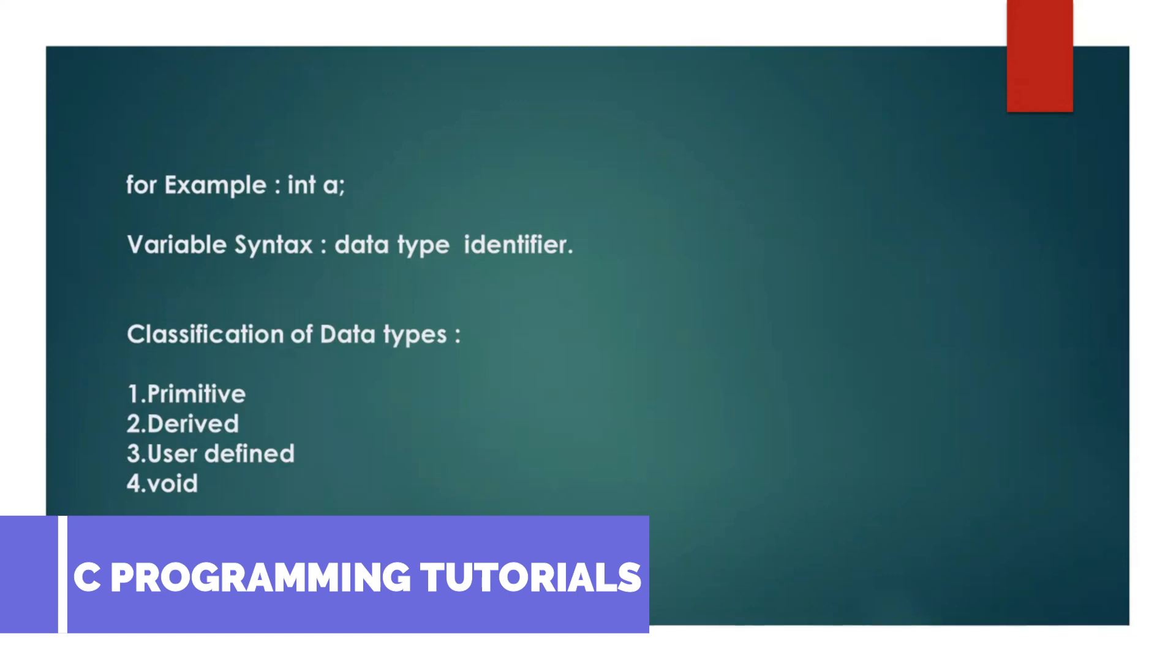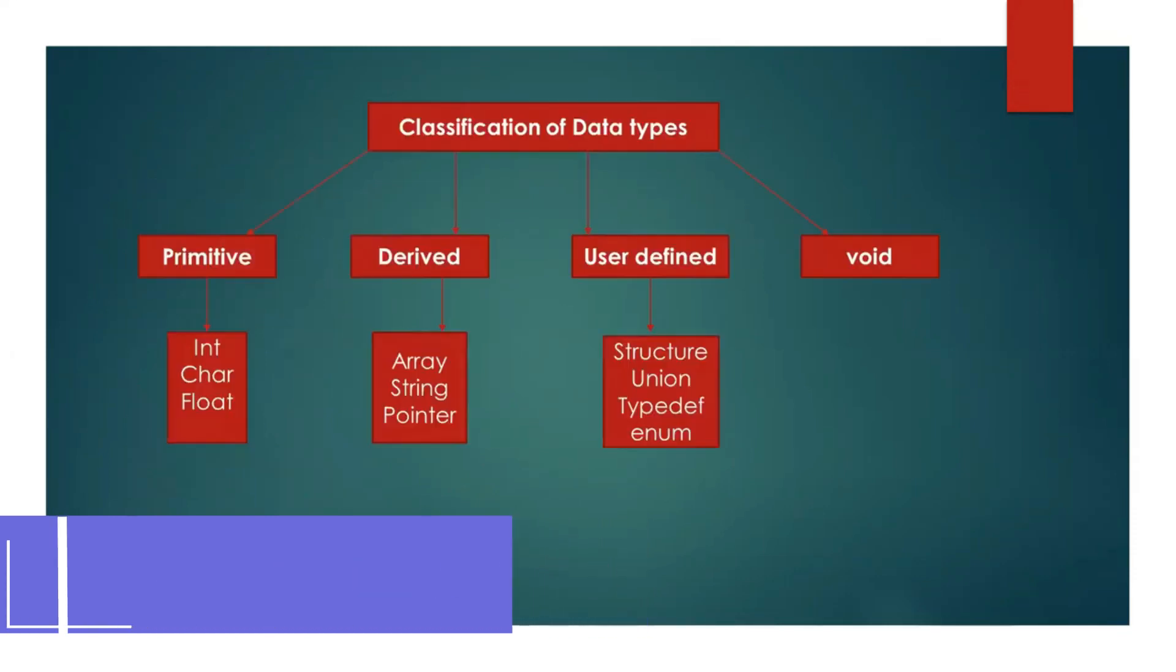Classification of data types: Primitive, derived, user-defined, and void. This is the pictorial representation of data types. First primitive, followed by derived, then user-defined, and then void. In primitive, we have int, char, float. In derived, we have array, string, pointer. In user-defined, we have structure, union, typedef, enum. This is the classification of data types.